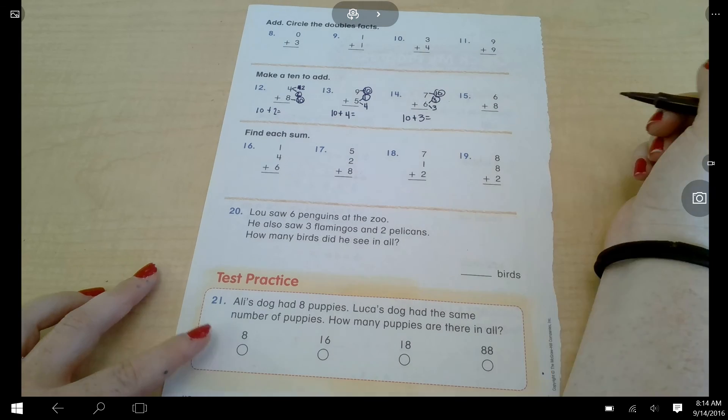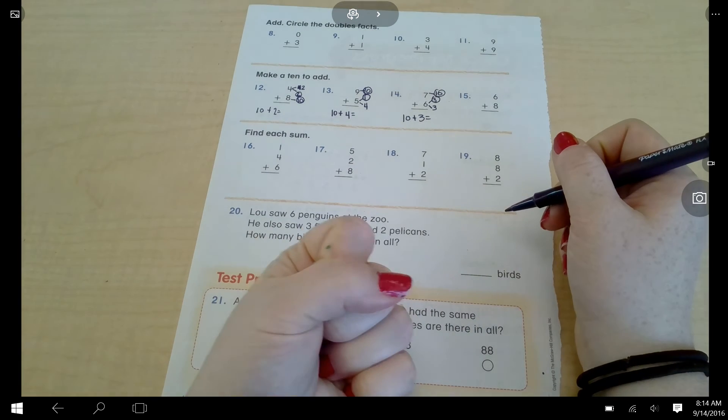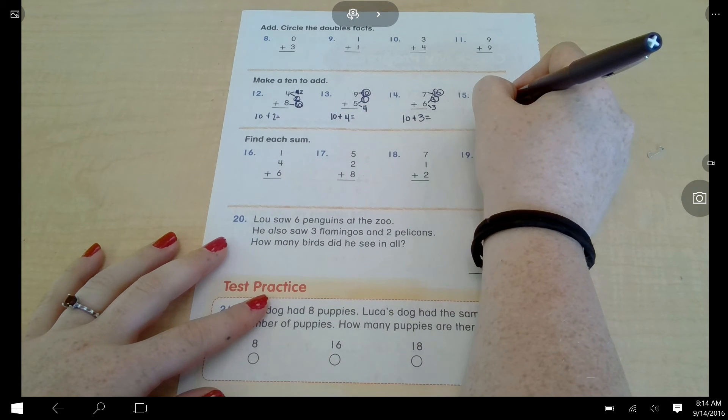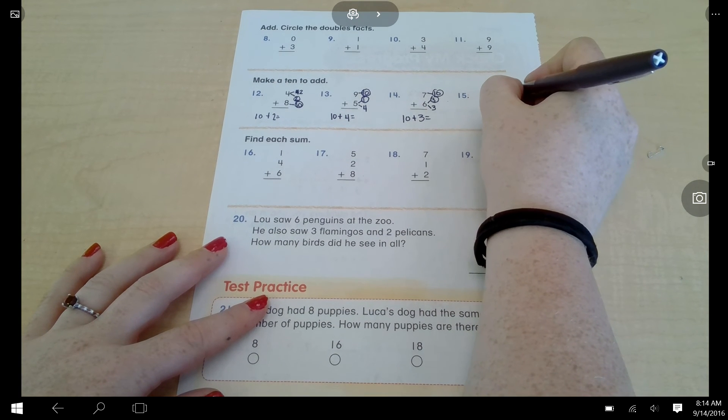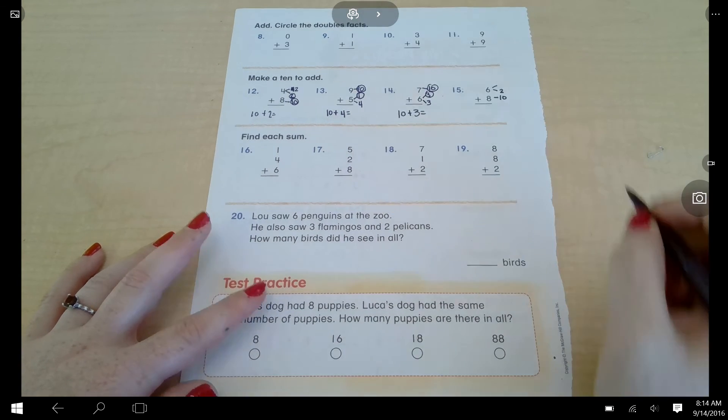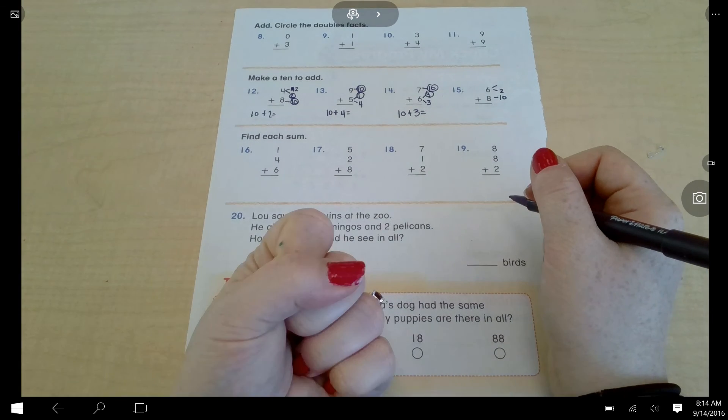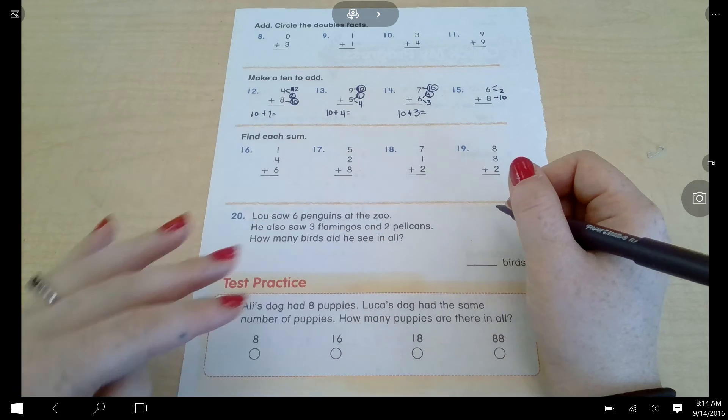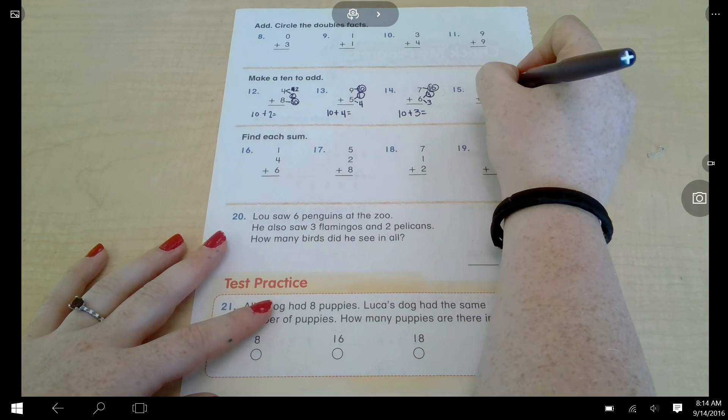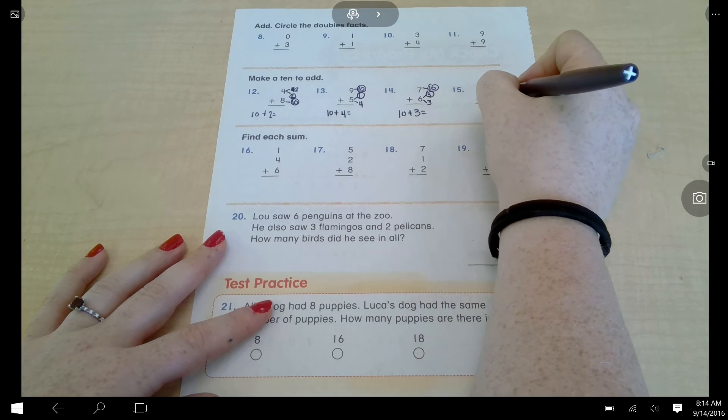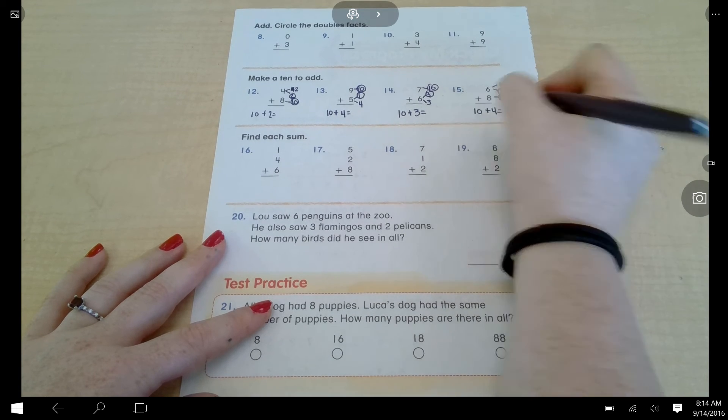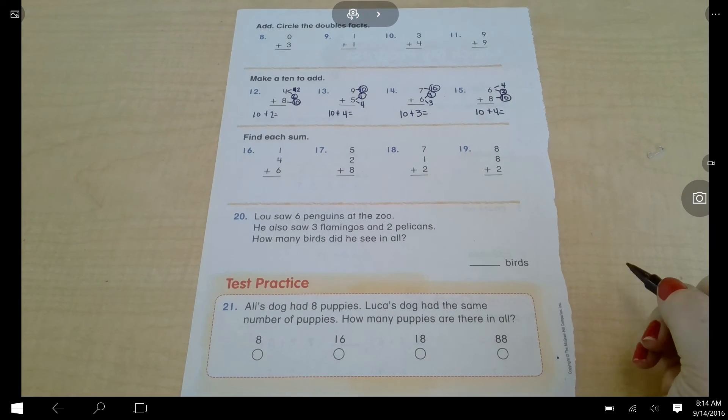Six plus eight. Eight is the bigger number. I need to... two, three, four, five, six. I have four fingers up. So now I have ten plus four. Solve this row. Once you're done, push play.